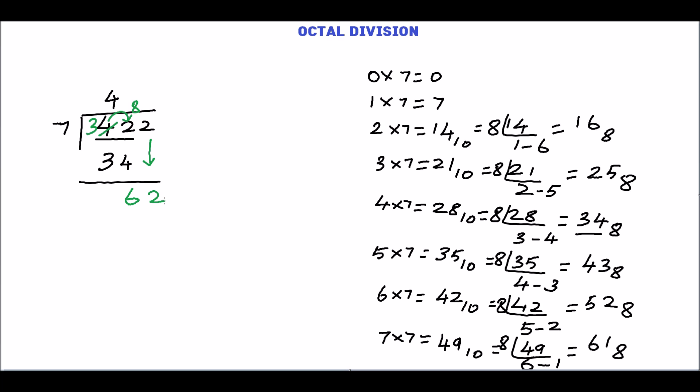How many times 7 goes into 62. In multiplication table less than 62 we have 61. So this is 7 times. Quotient is 7. 7 times 7 is 61. Subtract this.